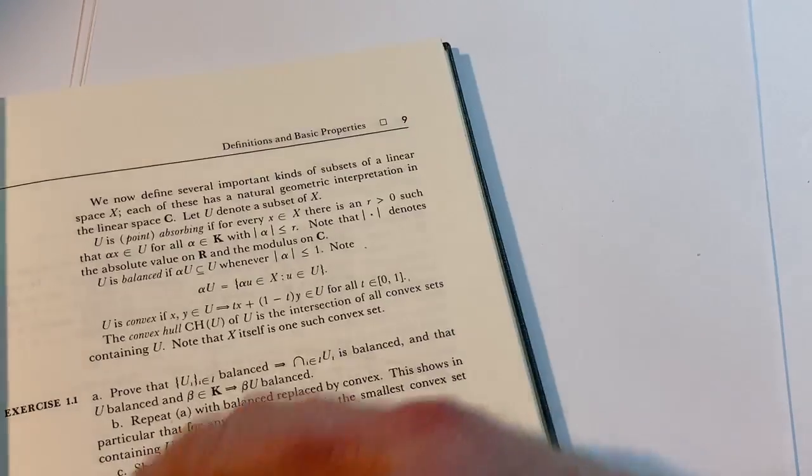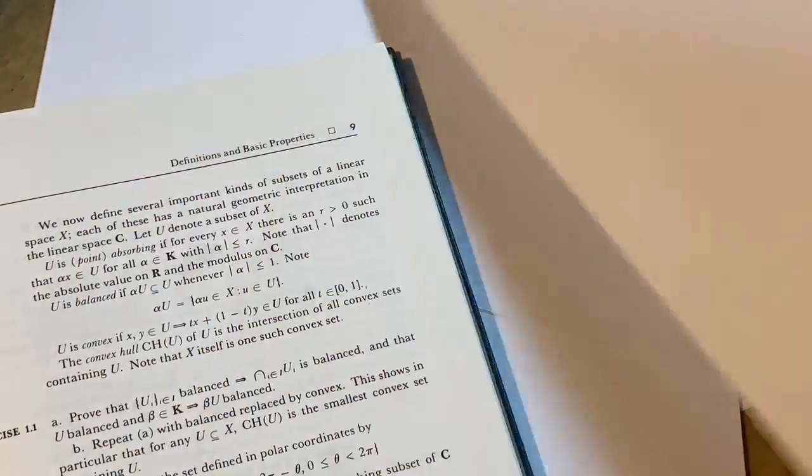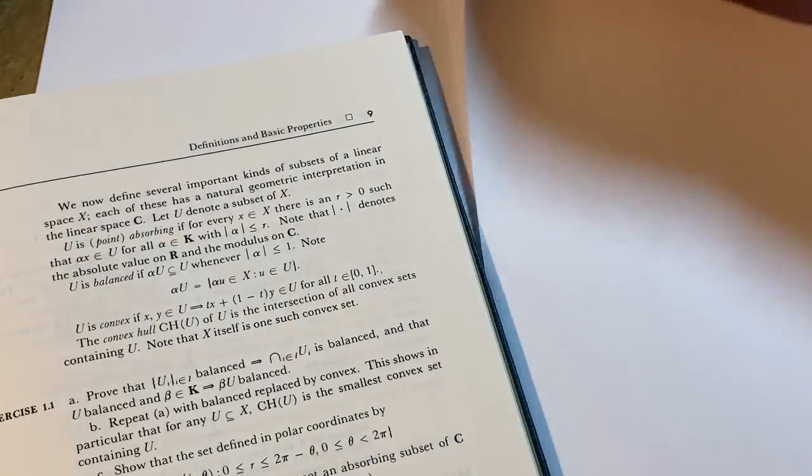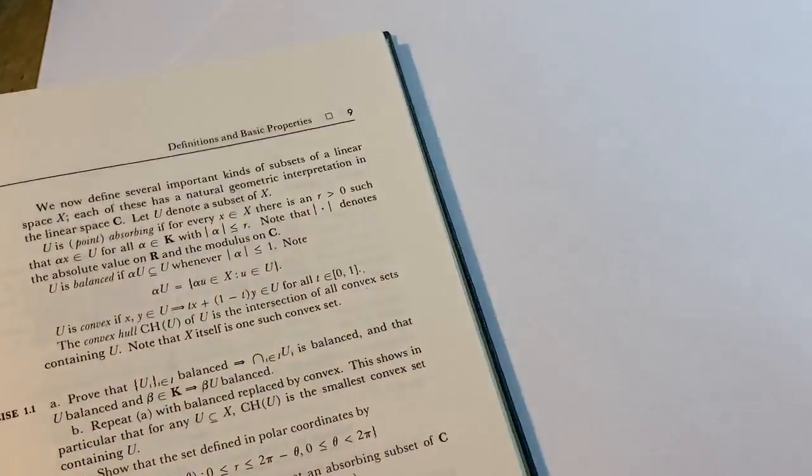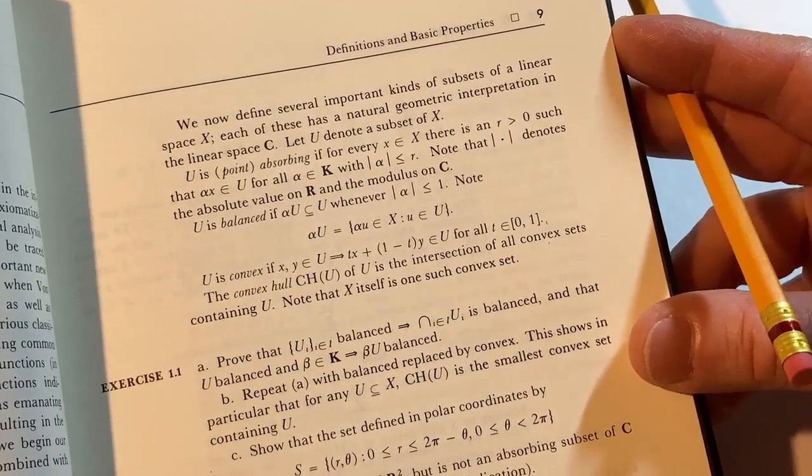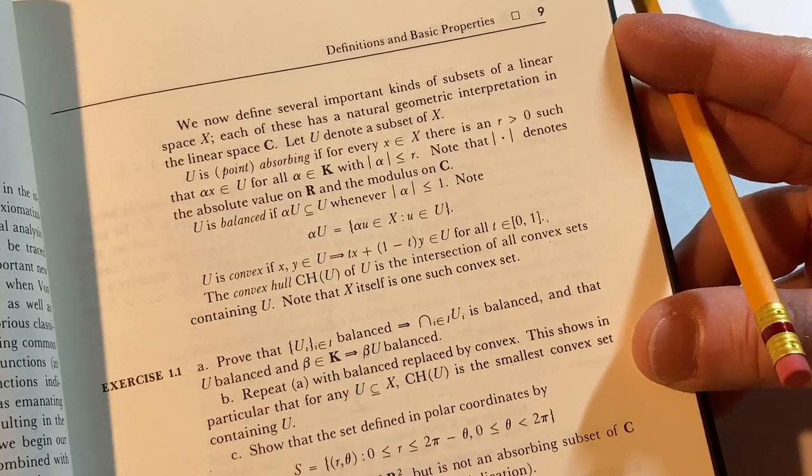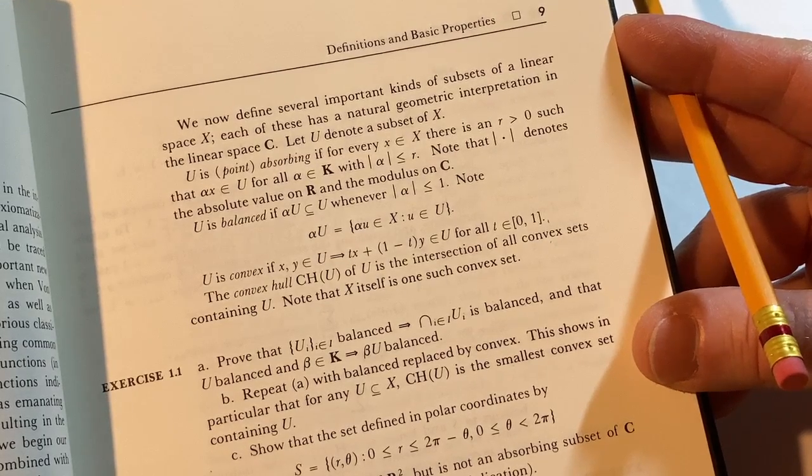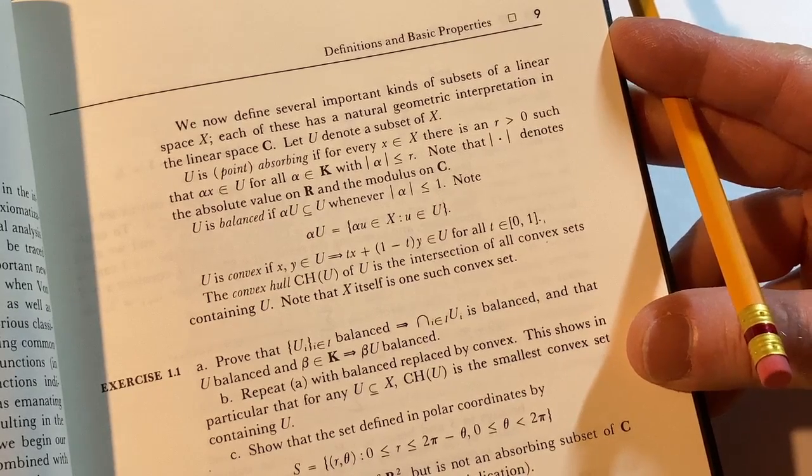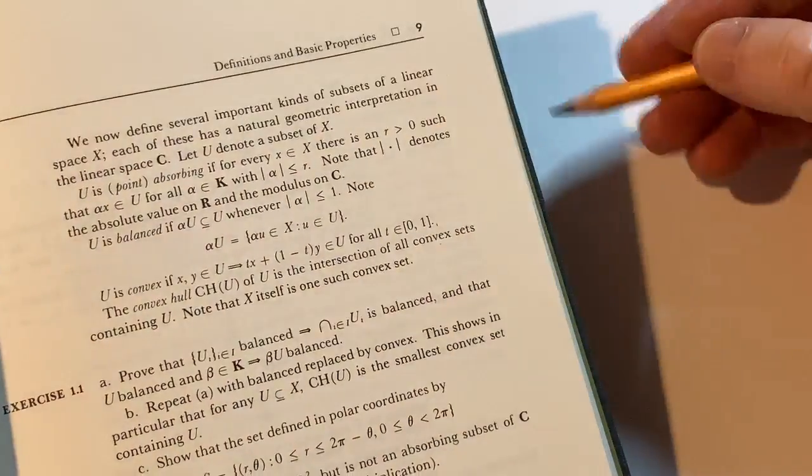This is not something that you may have never seen. Okay. These definitions. I think most people watching this video, I'm going to guess, have never seen these definitions. If you have, leave a comment because I'm curious because I bet very few people have. So let's read these. And let's interpret them. U is point absorbing. If for every X in X, there is an R greater than zero such that alpha X is in U for all alpha in K with the modulus of alpha less than or equal to R.